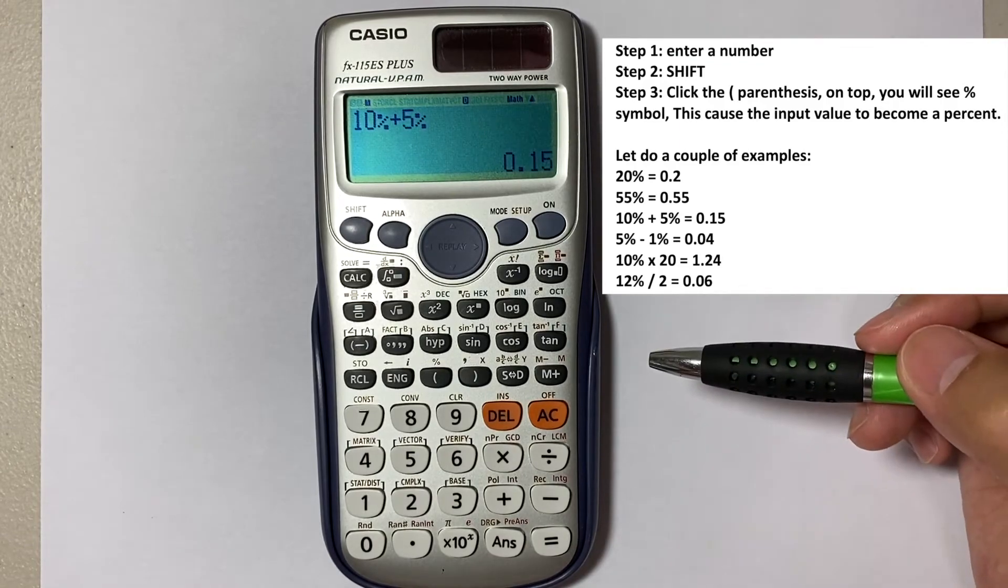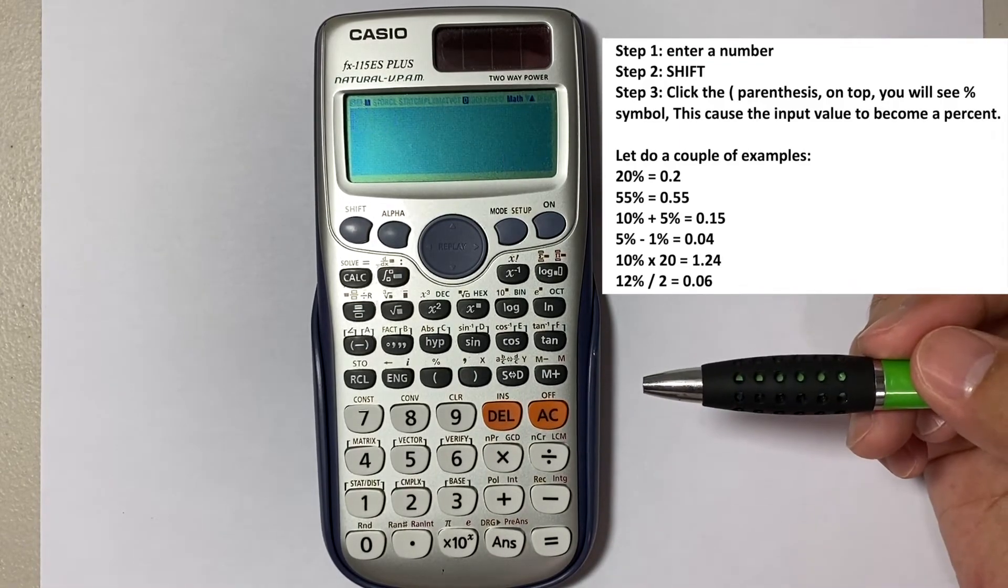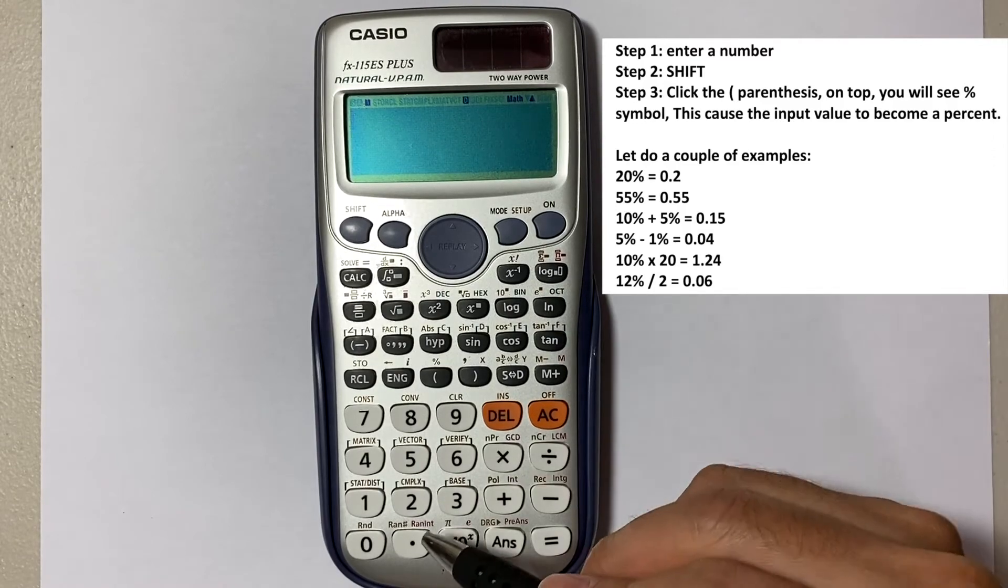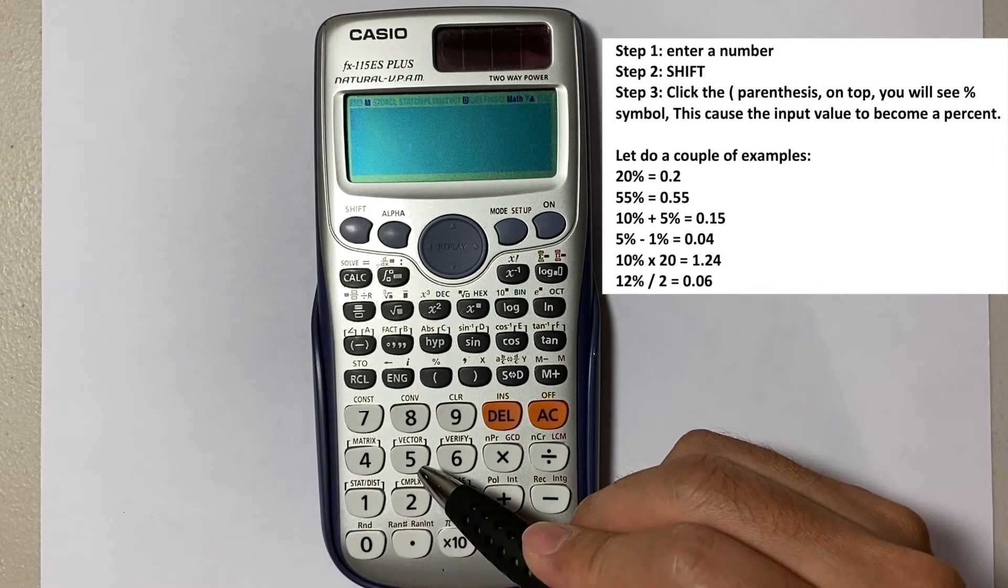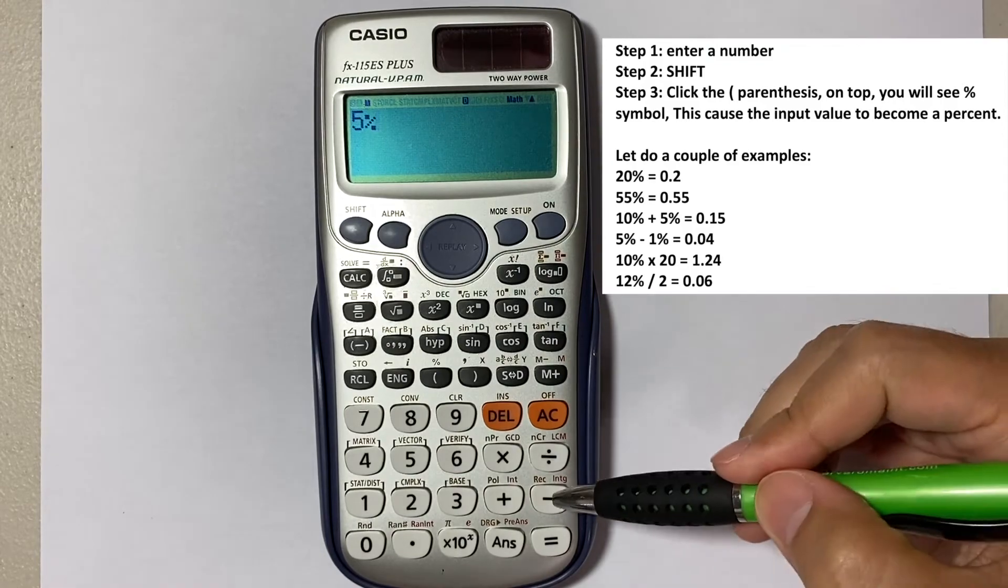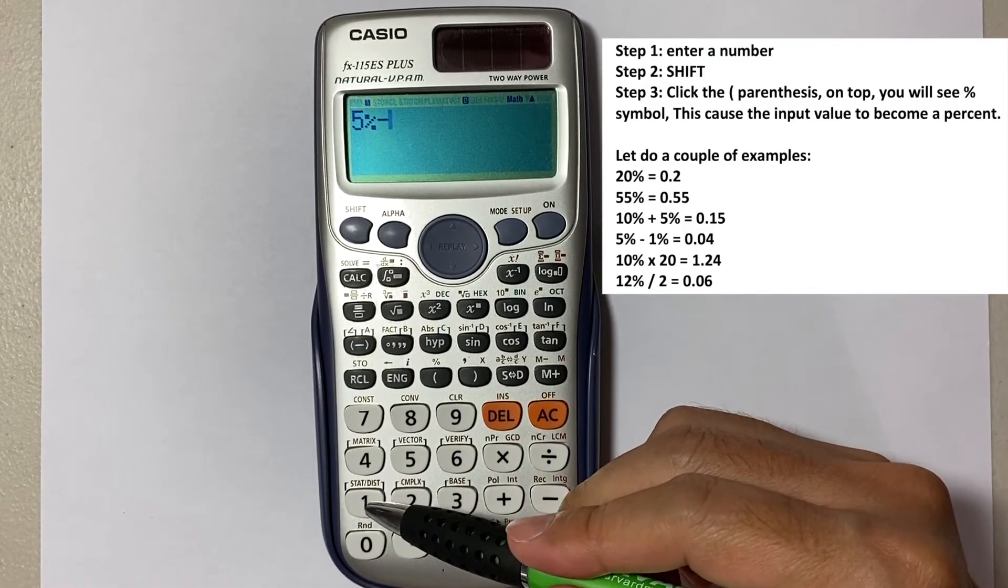And how about some subtraction? If you have 5 percent minus 1 percent, that will give you 0.04.